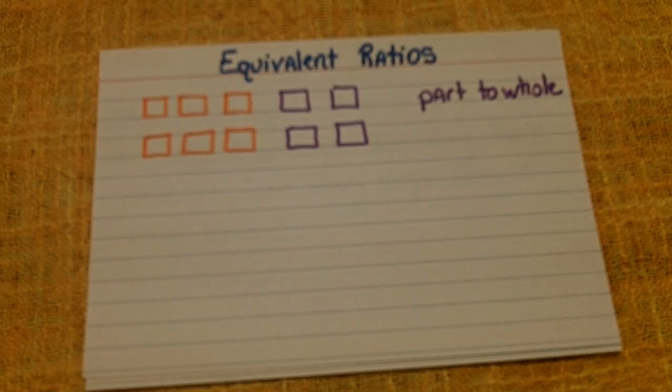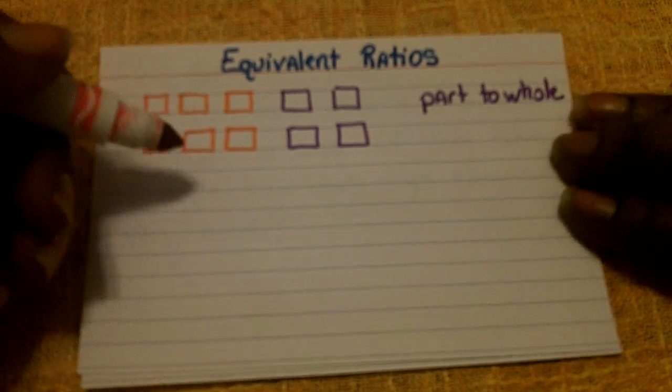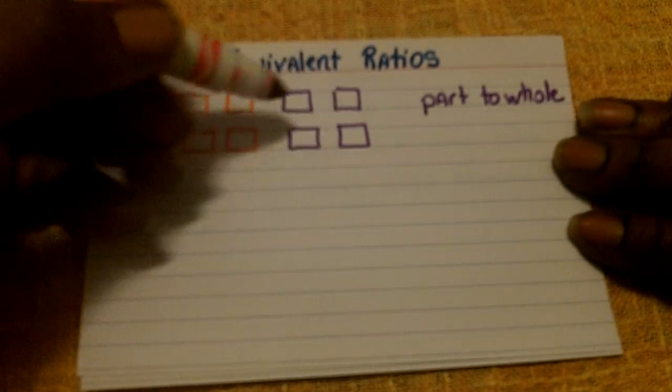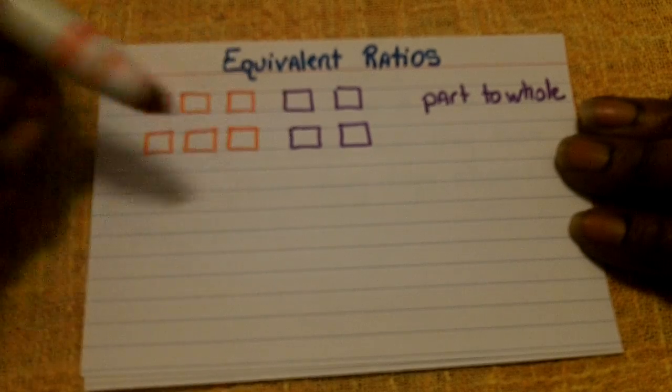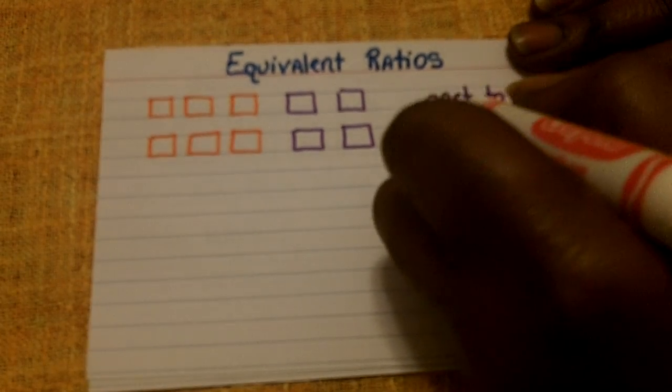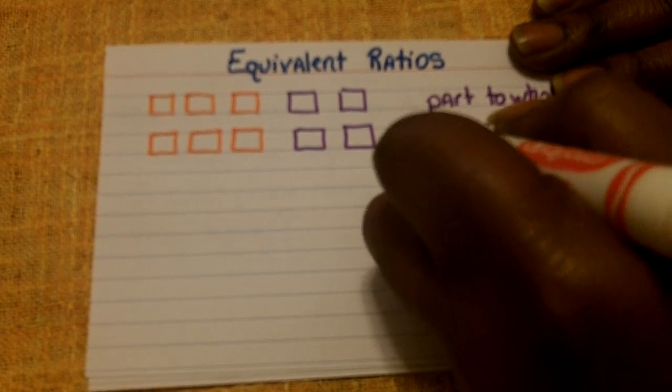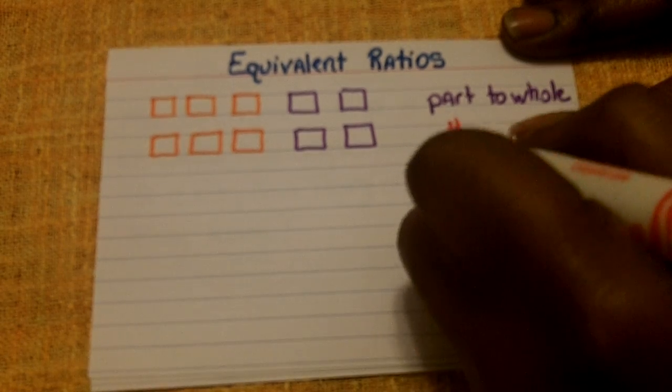Finally, I want to talk about equivalent ratios. The best way is with an example. So I'm going to first create a ratio, a part to whole ratio, using this picture of orange squares and purple squares. The part I want to focus on is the purple. We have four purple out of the total, the whole amount of squares, ten.